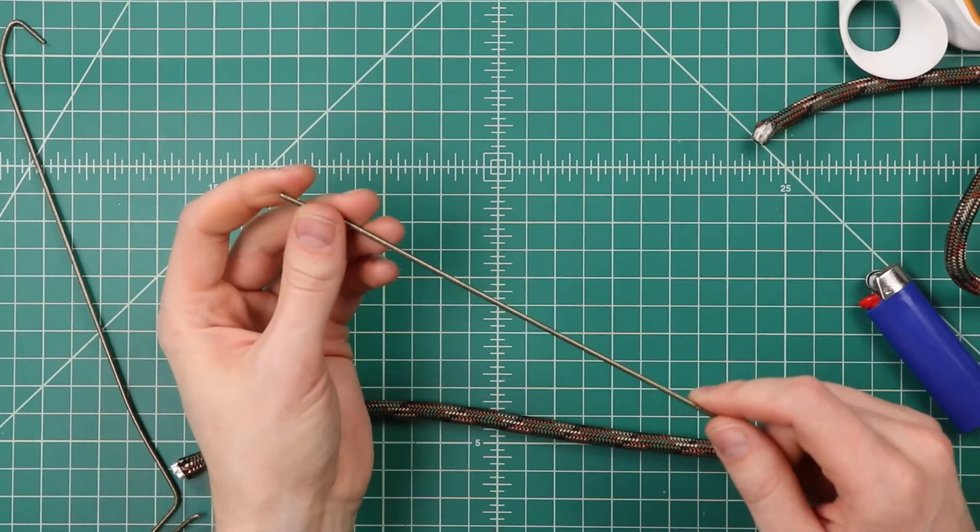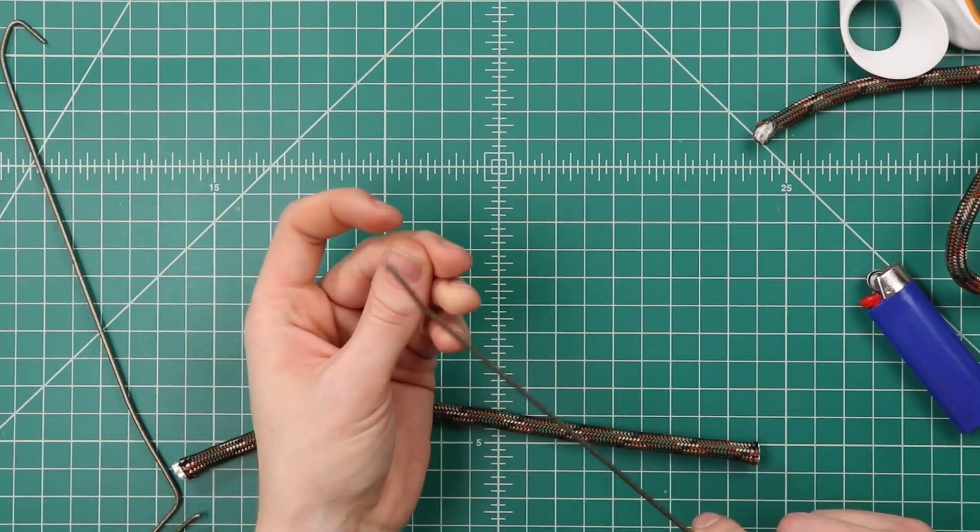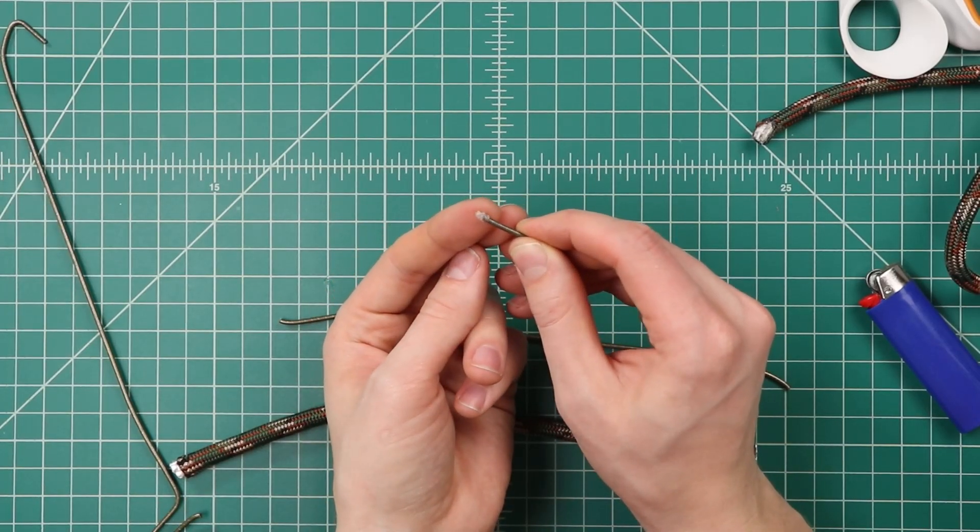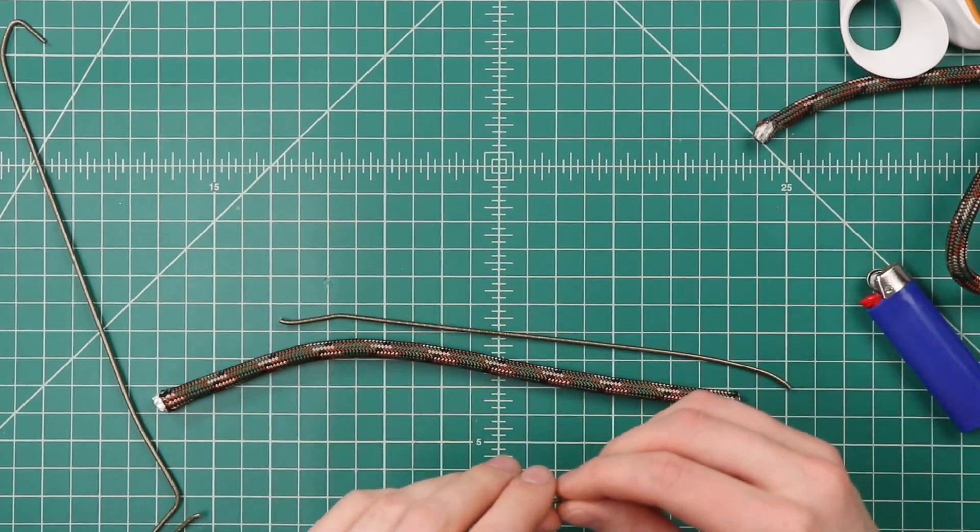If you just cut it with the pliers like I did, the end usually ends up pretty sharp, and so on my last one, I actually put a dab of hot glue on the end just to make it slide through our cord a little bit easier.